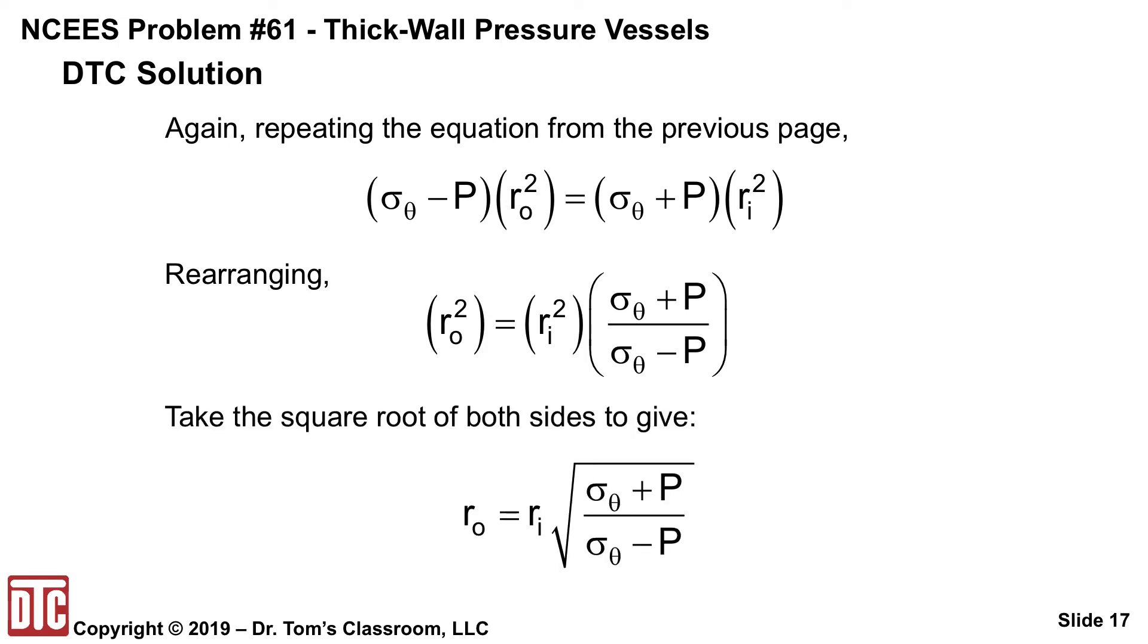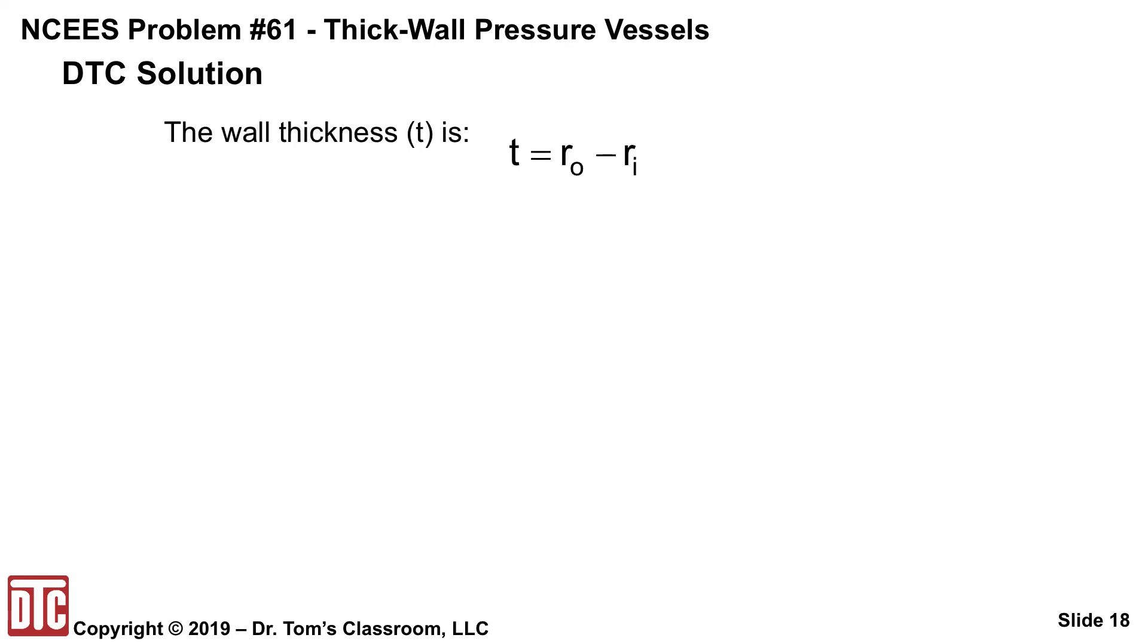And in fact, go on and do that. Take the square root of both sides so that we now have Ro is Ri times the square root term. And remember the wall thickness was Ro minus Ri. So substituting in what we just found for Ro, Ri times the square root term minus Ri.